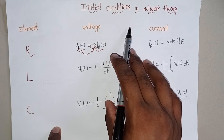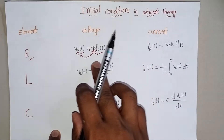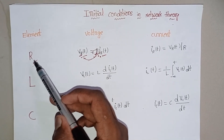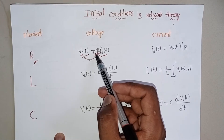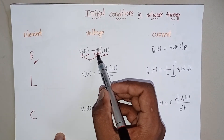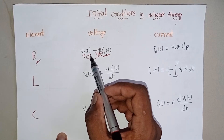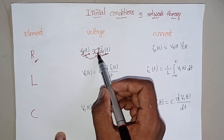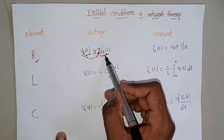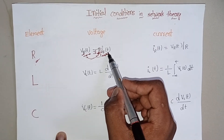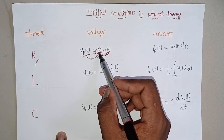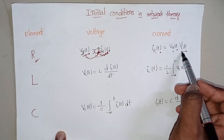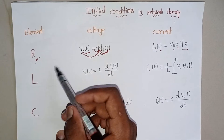Before going to see what are the initial conditions and final conditions, let's see voltages and currents across these elements. Voltage across the resistor R is Vr(t) = R × Ir(t). According to Ohm's law, voltage across the resistor is equal to the product of current passing through the resistor and that resistance. From this, current through the resistor is Ir(t) = Vr(t) / R.